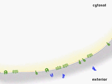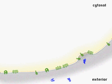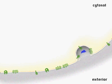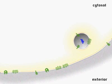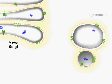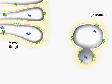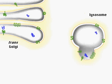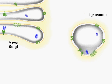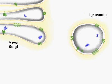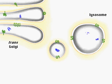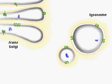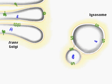Soluble proteins on the outside of a cell can reenter by endocytosis and are sorted to lysosomes for degradation. Other proteins, including lysosomal enzymes, sort directly to lysosomes from the trans Golgi.